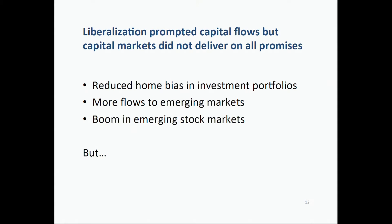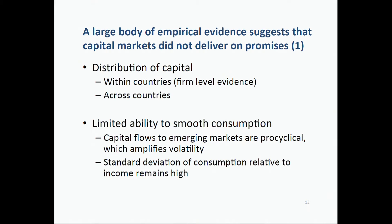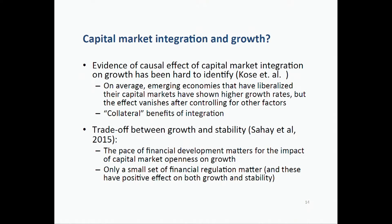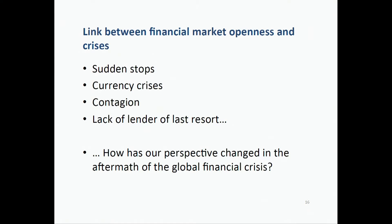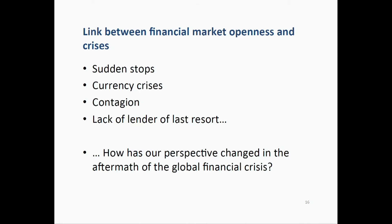We saw reduced home bias in investment portfolios and more flows to emerging markets, with a boom in emerging market stock markets. But the distribution of capital remained heavily in advanced economies. Another metric for gains from capital market liberalization would be whether countries can smooth consumption relative to their incomes — getting diversification benefits. What we see is that capital flows to emerging markets are pro-cyclical, suggesting they're amplifying the cycle rather than smoothing it. The link between financial market openness and crises became clear. So how has our perspective changed in the aftermath of the global financial crisis?